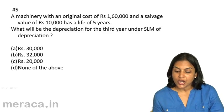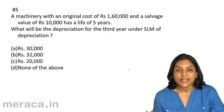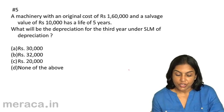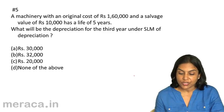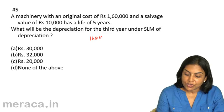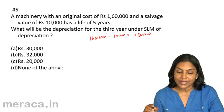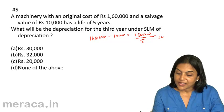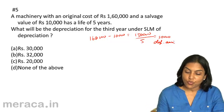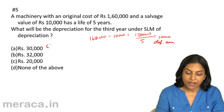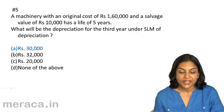A machinery with an original cost of 1,60,000 and a salvage value of 10,000 has a life of 5 years. What will be the depreciation for the third year under the straight line method? The depreciable amount is 1,60,000 minus 10,000 equals 1,50,000. Divided by 5, this gives 30,000 depreciation per annum. Under SLM, every year has the same depreciation amount, so the answer for the third year is also 30,000. The correct answer is 5A — 30,000.